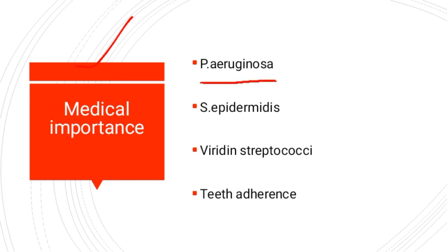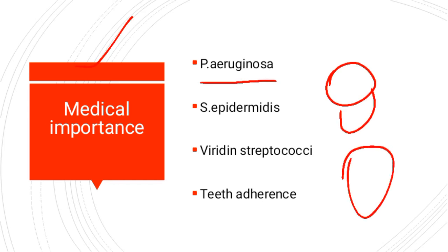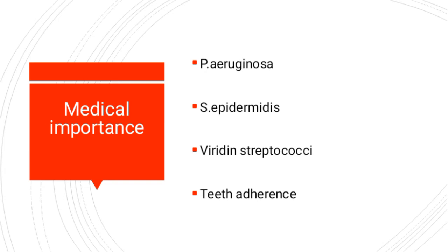Now, what is the medical importance of the slime layer or glycocalyx? Number one: Pseudomonas aeruginosa causes respiratory tract infection in cystic fibrosis patients. Cystic fibrosis is an inherited lung disease; with the help of glycocalyx, the bacteria attach to the lung surface and cause infection. Number two: Staphylococcus epidermidis and viridans streptococci both cause endocarditis — infection of the heart valve — with the help of glycocalyx. Additionally, bacteria adhere to teeth using glycocalyx and form a yellowish plaque. Thus, glycocalyx or slime layer enhances the pathogenicity of bacteria.